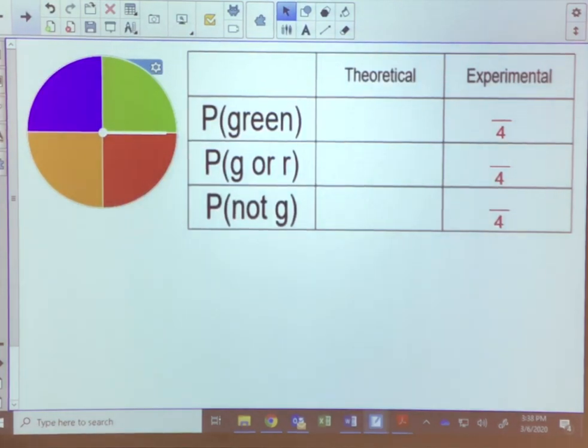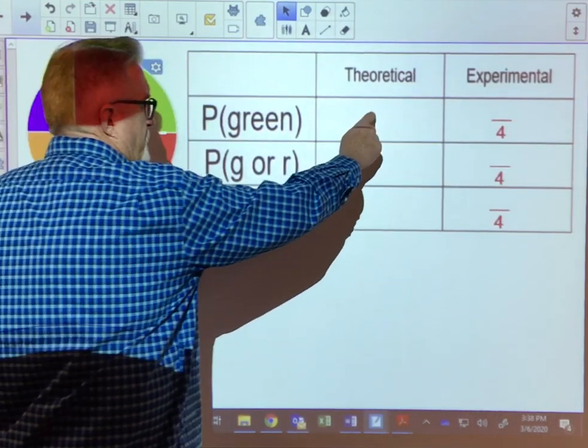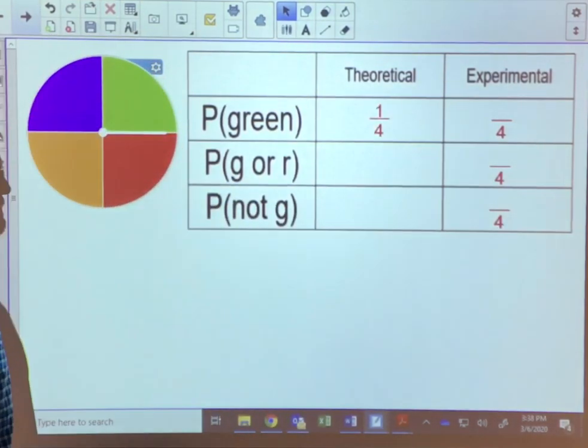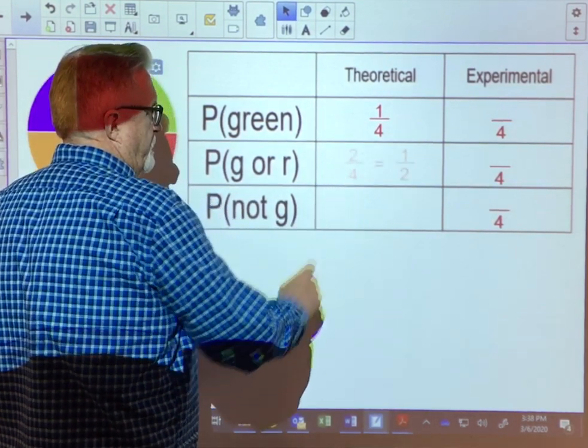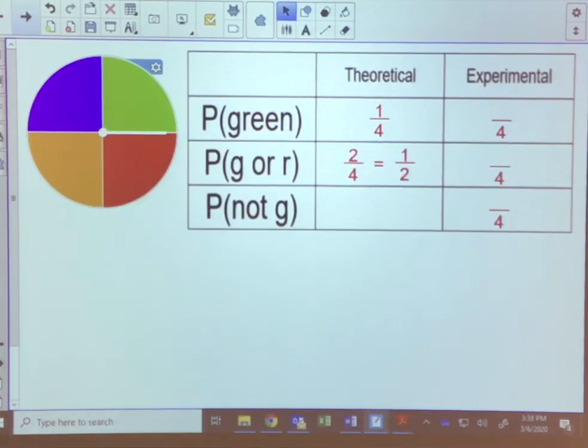So theoretical probability is what should happen. Experimental probability is what actually happens when we try the experiment. Let's do it again here with a spinner. We've got a spinner divided into four equal parts. We're looking for the probability of spinning and it landing on green. Well, four total outcomes, one favorable outcome, so the theoretical probability is one out of four. For the probability of landing on a green or a red, well that's two ways that we can win, so that's two out of four, which will simplify down to one out of two.